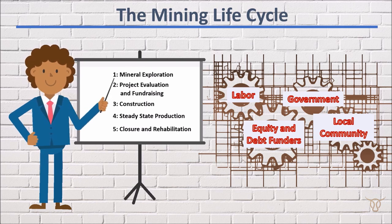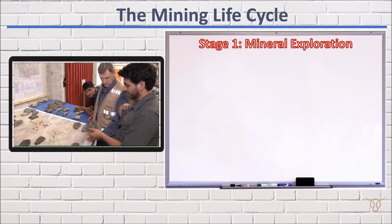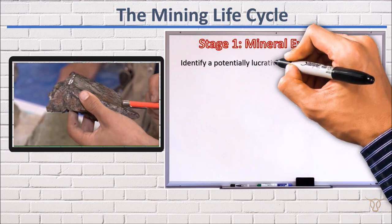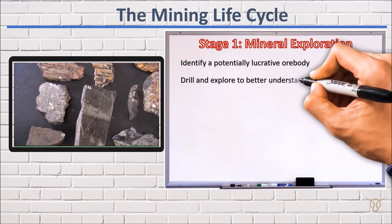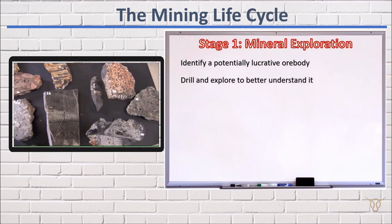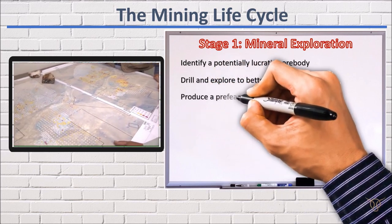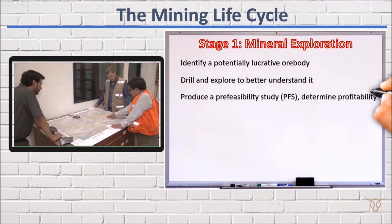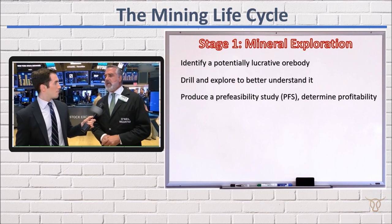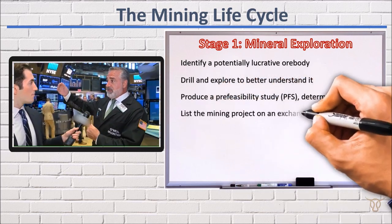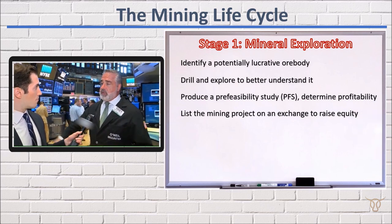Let's begin with Stage 1: Mineral Exploration. Here, sponsors identify a potentially lucrative ore body but still need to drill and explore the ore body further in order to better understand it. This stage culminates in a pre-feasibility study combining results of drilling and exploration with a preliminary financial assessment of the project to determine its profitability. Once sponsors are satisfied that the ore body could be profitably exploited, they would typically list the mining project on an exchange in order to raise equity.